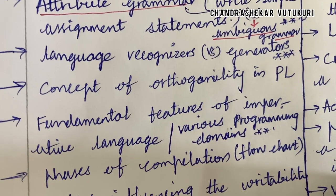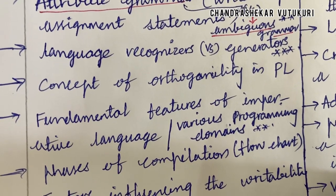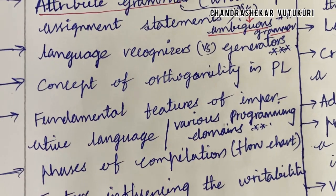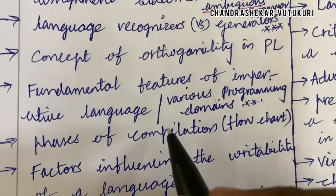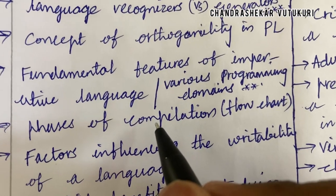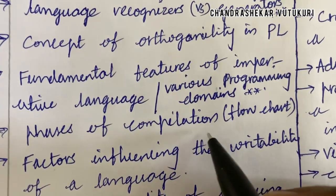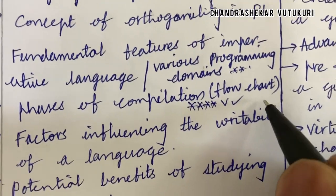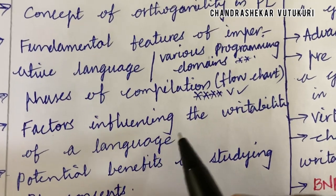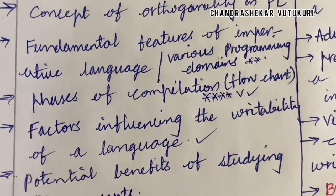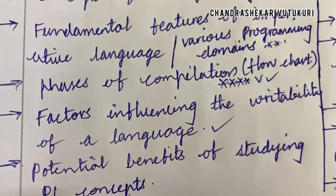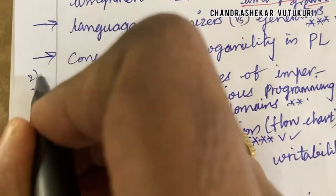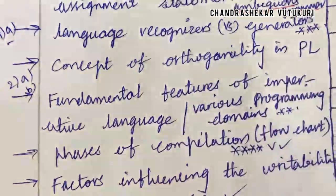Hope you are liking my videos. If you haven't subscribed, please do subscribe to my channel. I am going to work out second-year as well as first-year important questions as per Part A and Part B. Phases of compilation is an important short or long question, often accompanied by a flowchart. Factors influencing the writeability of a language is a very interesting question, and the potential benefits of studying programming language concepts may also be a long question. From this part, expect questions for both second-year and first-year students.